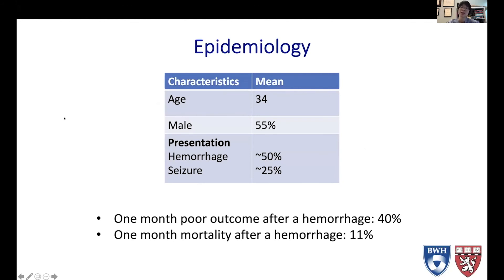Moving on to epidemiology: the average age at presentation for AVM is 34, which reflects their largely congenital nature. There is roughly equal male-to-female predominance, just slightly more male. Importantly, half the patients with AVMs present with hemorrhage, a quarter present with seizures, and the rest are found incidentally. The outcome after hemorrhage is quite poor, with a 10% mortality and 40% poor outcome at one month after hemorrhage.